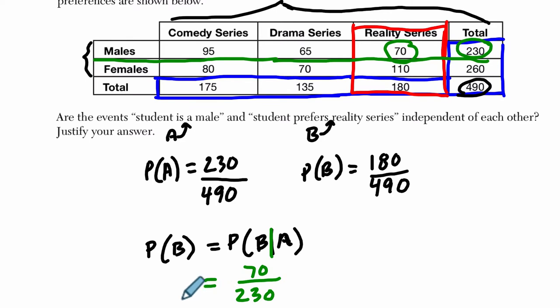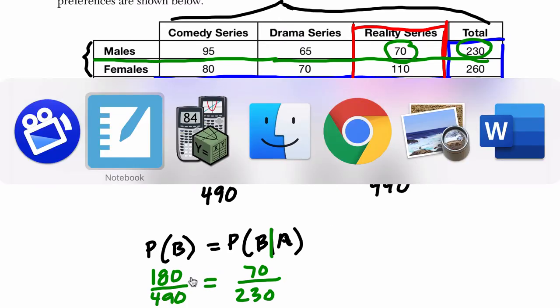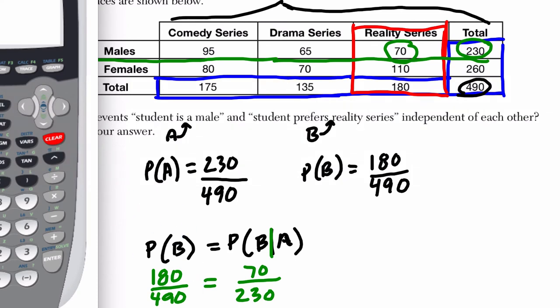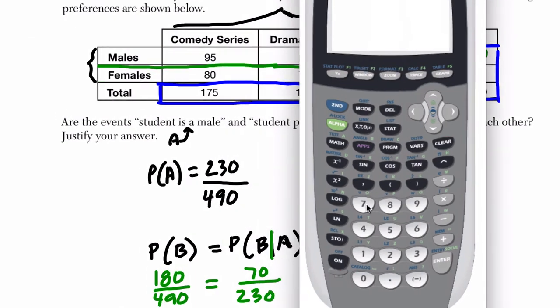Now, does that equal the probability of B, which is 180 over 490? And the answer is no. And we can test that really quickly. If you had a calculator out, you could just say, okay, well, what's 70 divided by 230? Okay, that's about 0.304. And what's 180 divided by 490? It's different. It's a different number. These are not equal.